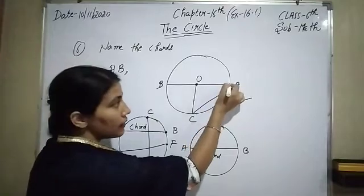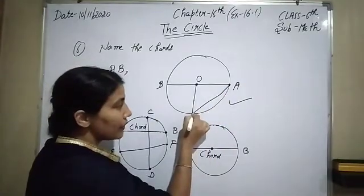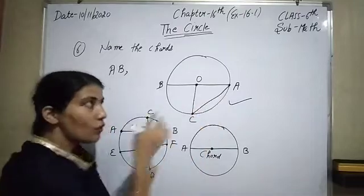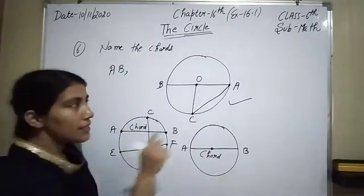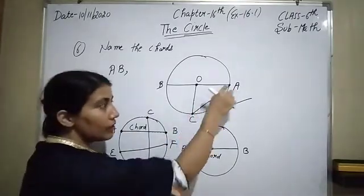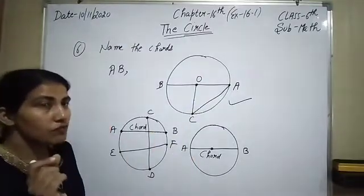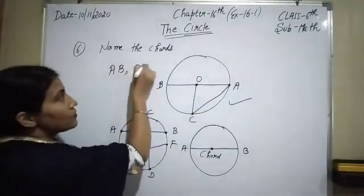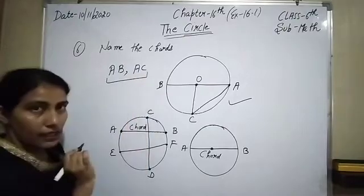Here are two points on the circumference — here is the first point and here is the second point. That means AC is also a chord of the circle because it is also connected with two points on the circumference of the circle.